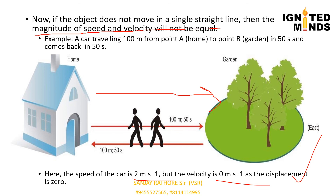Non-uniform velocity, also called variable velocity: suppose a car moves east but covers unequal distances each hour — 20 km in the 1st hour, 10 km in the 2nd, 15 km in the 3rd, 30 km in the 4th. This is non-uniform or variable velocity. Other examples include a bus moving north on a crowded road, a stone thrown vertically upward, a stone dropped from a building, and a body moving in a circular path such as a moving fan — all have variable velocity.